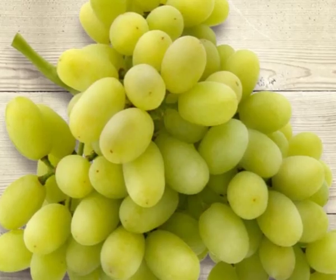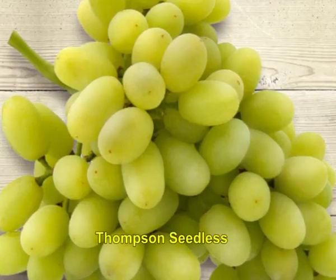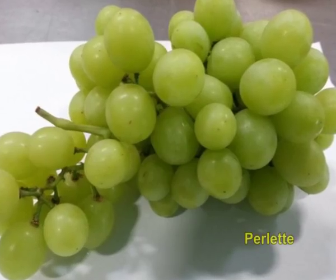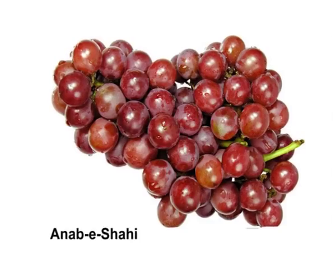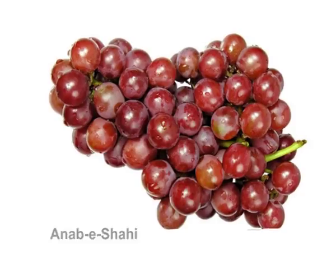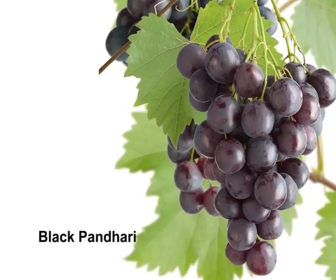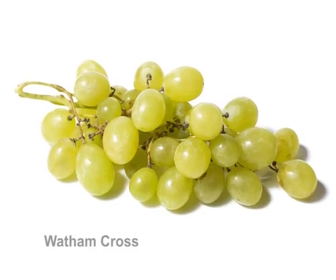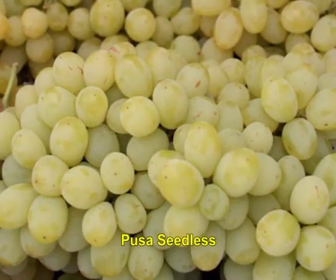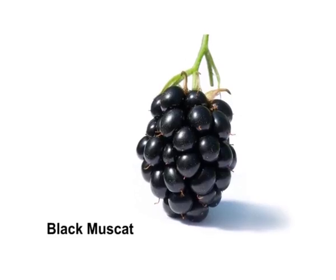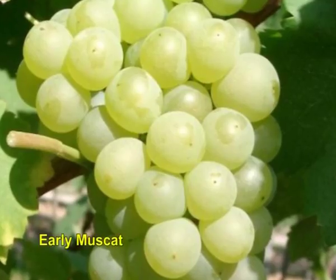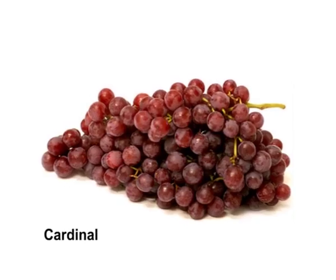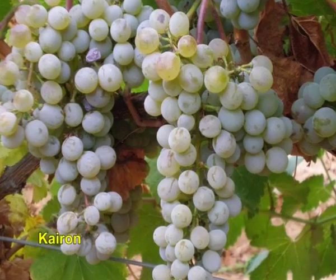These northern regions prefer varieties like Thompson Seedless, Perlet, Beauty Seedless, Anab-i-Shahi, Black Pandhari Shahi, Vatham Cross, Pusa Seedless, Black Muscat, Early Muscat, Bangalore Purple, Cardinal, and Cherag.